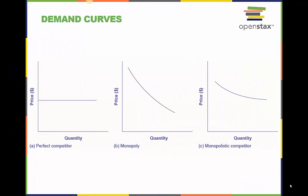The demand curve faced by a perfectly competitive firm, as seen on the left, is perfectly elastic, meaning that it can sell all the output it wishes at the prevailing market price. The demand curve faced by a monopoly, seen here in the middle, is the market demand. It can sell more output only by decreasing the price it charges.